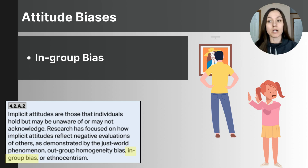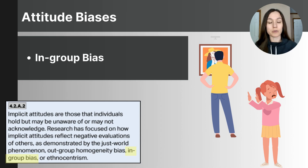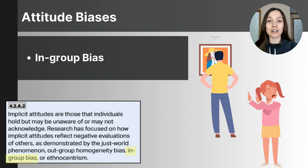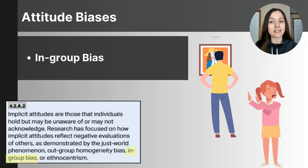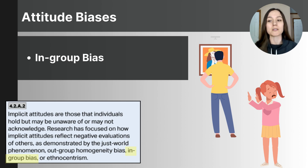In 1971, social psychologist Henri Tajfel and his research partners found this was very true. They divided participants into groups based on something meaningless — whether they preferred one type of artwork over another. Despite having no real connection to group members and no competition, participants still showed a clear preference for their assigned group. They were more likely to give points and rewards to their own group, even if it meant being unfair to others, showing how easily in-group biases form.